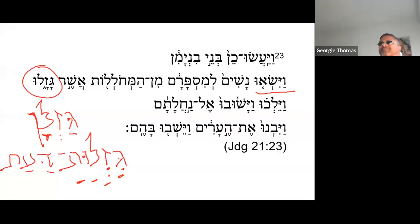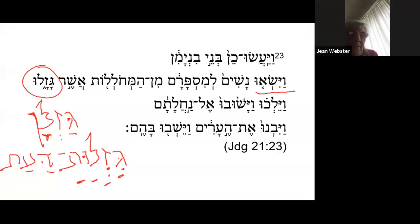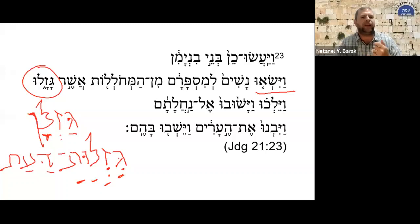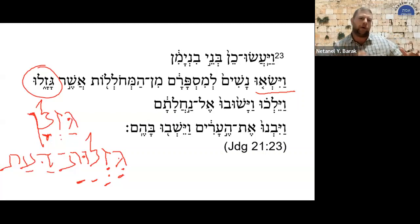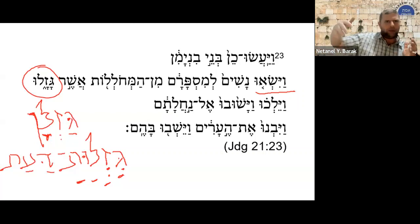We were talking about polel, and asking: is it the same as pi'el — active, doubled stem, same nature? Essentially yes, this is what we said about complementary distribution: pi'el is the regular form, and for roots that have a vav as the second root letter, or roots whose second and third root letters are identical, the regular form becomes polel. There are exceptions, but that's the answer generally speaking.